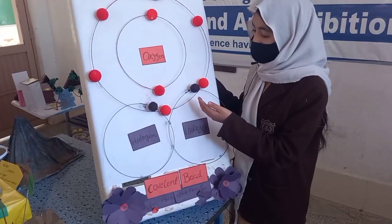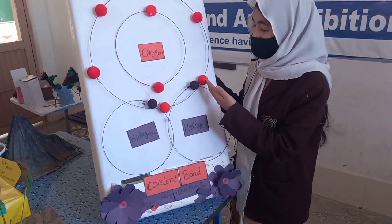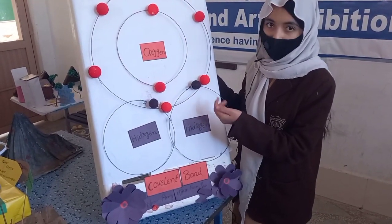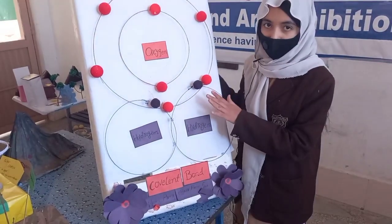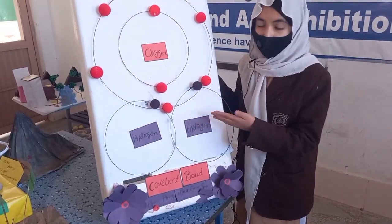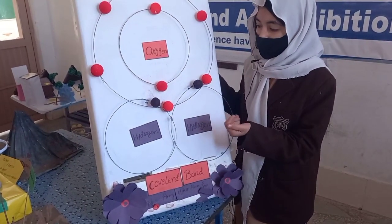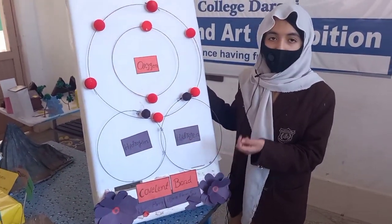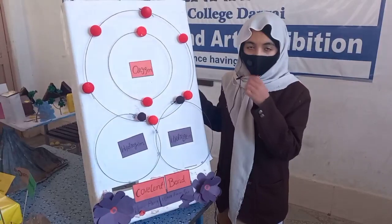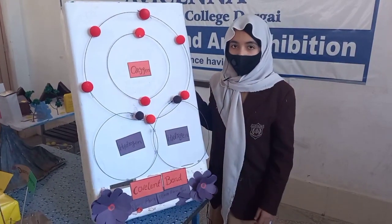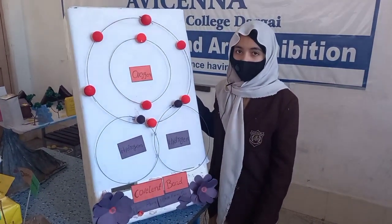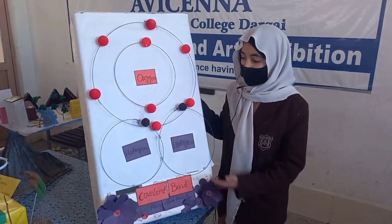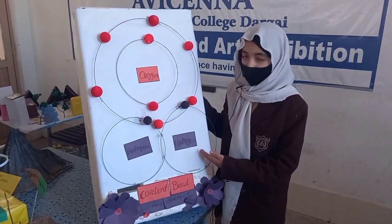So hydrogen shares 2 electrons from the second shell, so they are complete. This is a mutual sharing of electrons, so this is a covalent bond. There are 4 types of bonds: coordinate bond, dative bond, ionic bond, and covalent bond.